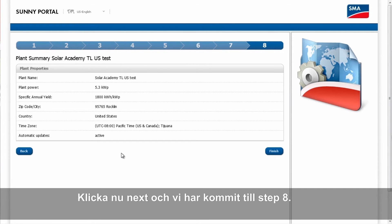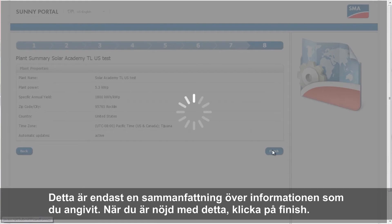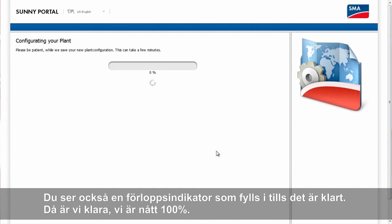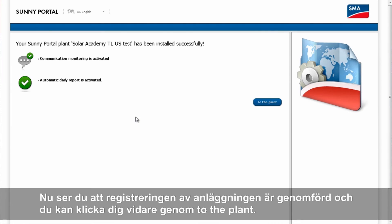We're on to step eight, which is just an overview of the information you've entered. When you are happy with it, click on Finish. You'll see that Sunny Portal is actually uploading information — this can take a few minutes and you'll see a progress bar. Wait till it's done. There we go, we have 100%, and you see a verification that the Sunny Portal has registered the new plant.